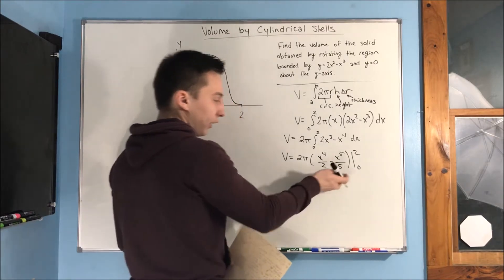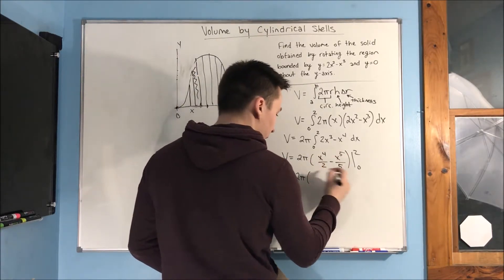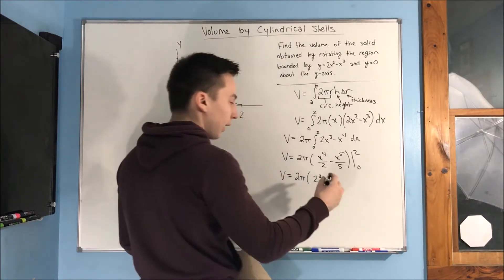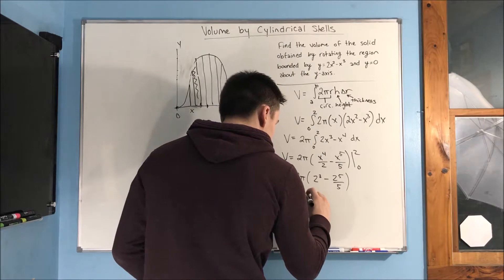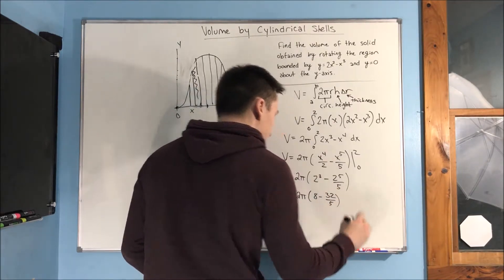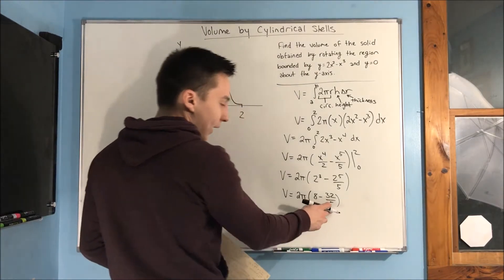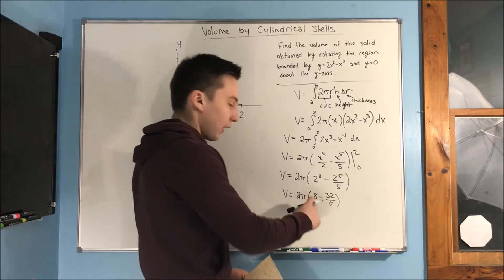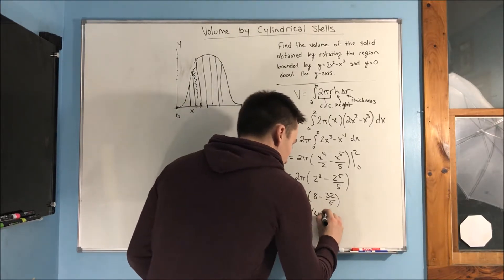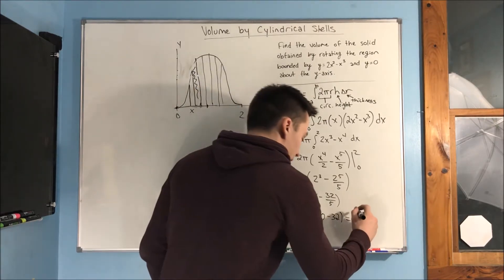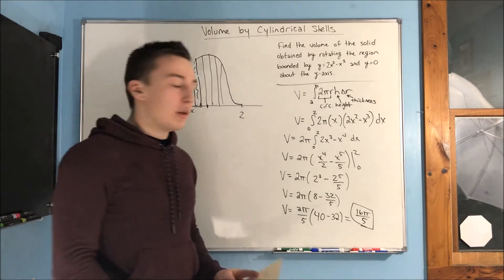So, the zero is just going to kill everything in here. So, we can just plug in that two. We're going to get volume is equal to 2 pi times, well, we have a 2 to the fourth over 2. That's going to be 2 to the third minus 2 to the fifth over 5. And, when I write that again, 2 pi times 8 minus 32 over 5. Some teachers, some professors, they might think that's okay. I'm going to simplify it a little further. I'm going to take that over 5 out. To do that, I would have to multiply this 8 by 5. That's just a little bit of algebra. We get 2 pi over 5 times 40 minus 32. And, that equals, 16 pi over 5. And, that's basically it. That's all we have to do.